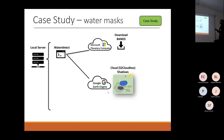Microsoft Planetary Computer was used to download just the specific bands needed on-demand without the need for storing. Google Earth Engine was used because it has a very good cloud mask called S2 Cloudless — a random forest machine learning process trained across the globe.